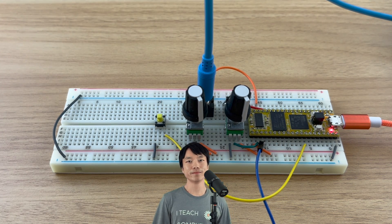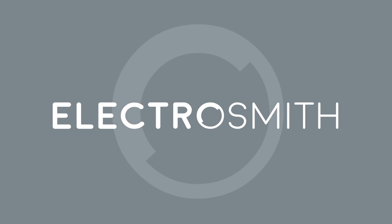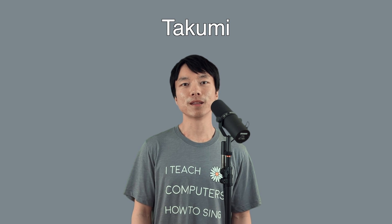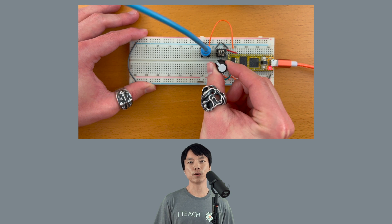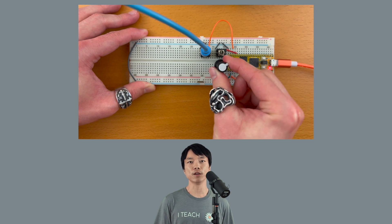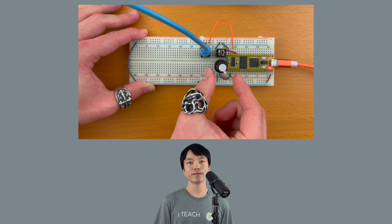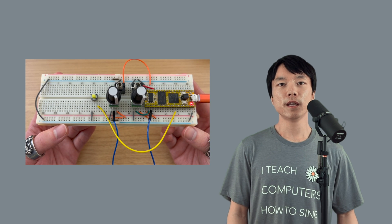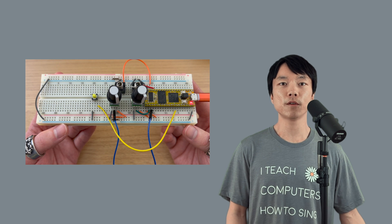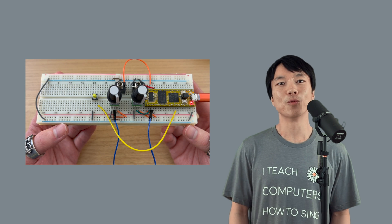Let's connect the button to the DAISY. Hi, this is Takumi from Electrosmith. In the previous tutorial, we were able to change the pitch of an oscillator by twisting a knob. In this video, we'll learn how to connect the button to the DAISY Seed and turn the oscillator tone on or off with it. Okay, let's get started right away.